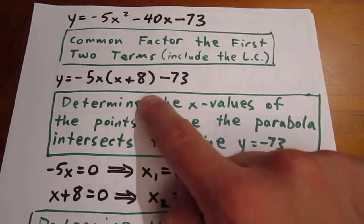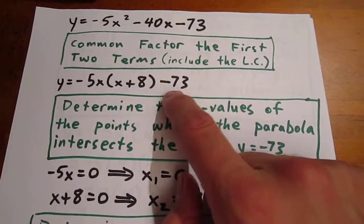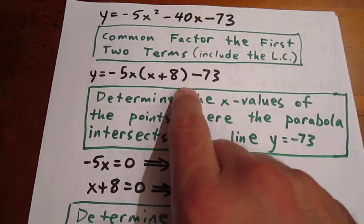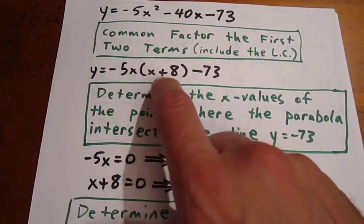we can determine where this parabola crosses the line y equals negative 73 by letting the first part of this expression equal 0 and solving for x. That would mean x is either 0 or negative 8.